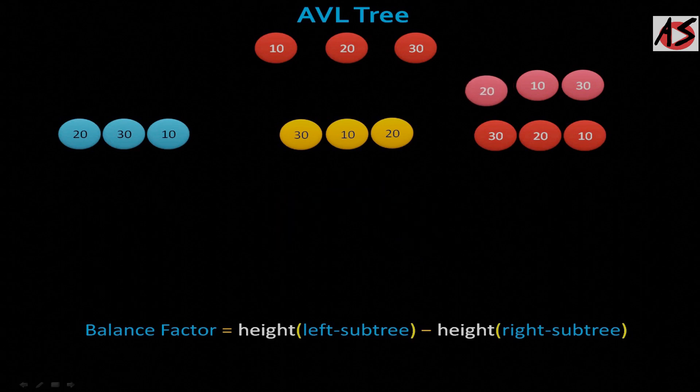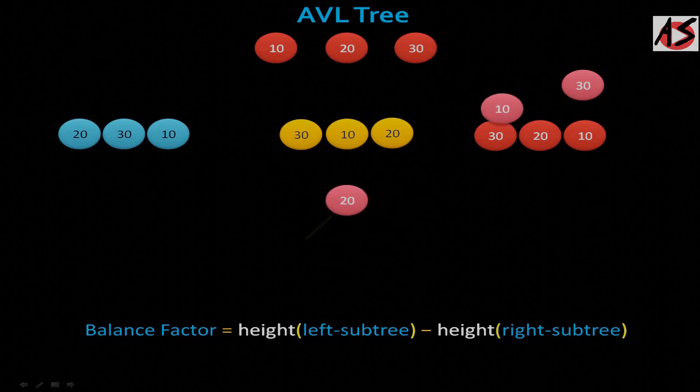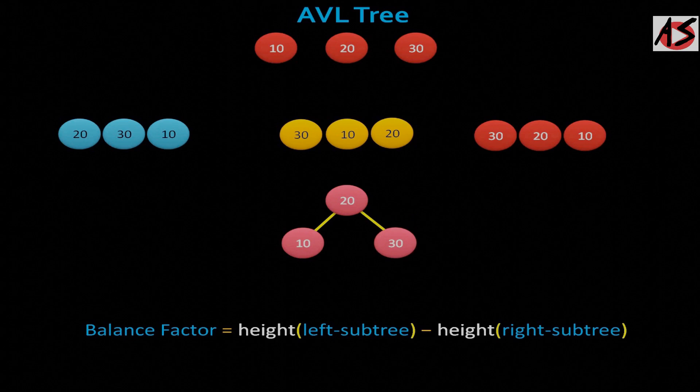Now for the third order, that is 20, 10, and 30 are inserted like this. So you can see here, balance factor of all the nodes are 0 already. So no further balancing required here.